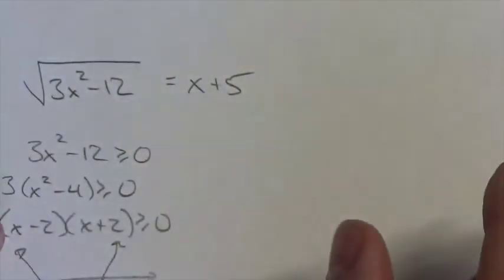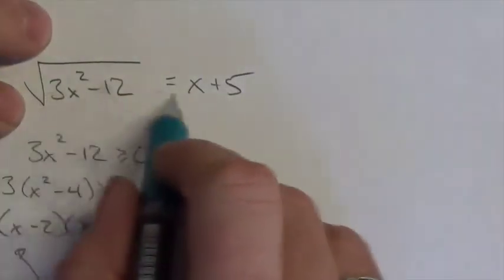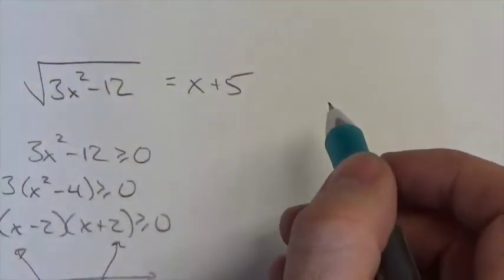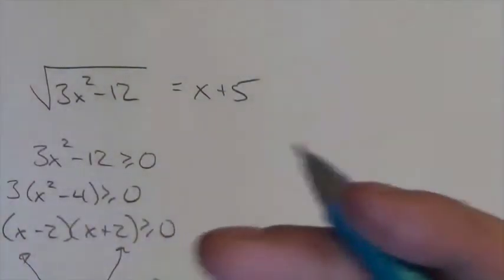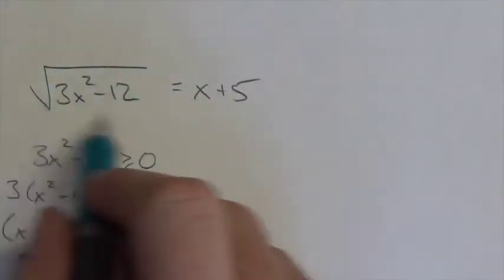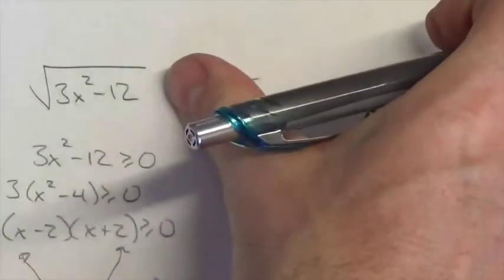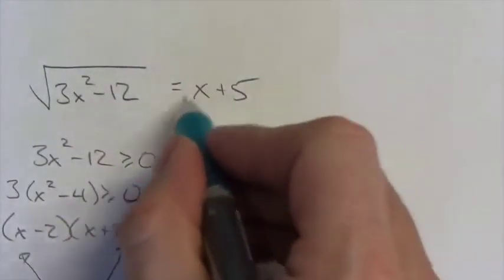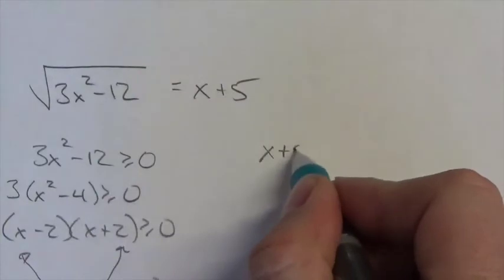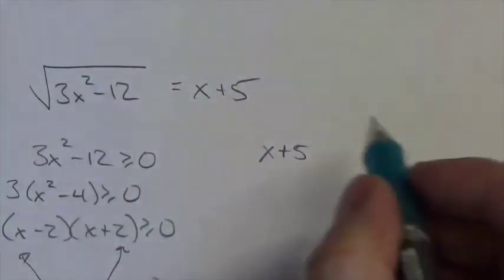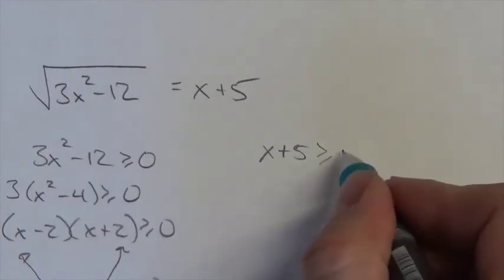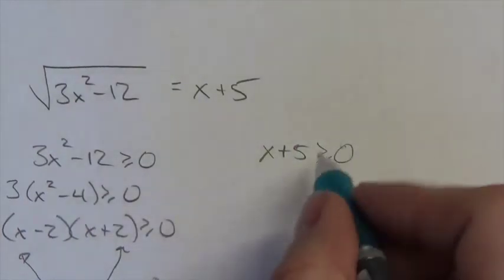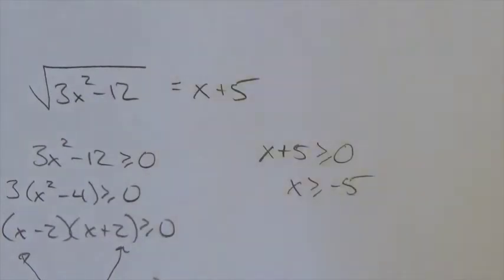Now, that doesn't answer the question for us completely yet, because remember, the radical is equal to a linear expression here. Now remember, a radical can only produce positive values. Okay, so the left-hand side, when all is calculated there, is only producing positive values, which means the right-hand side can only be equal to positive values, which means it's got to be greater than or equal to 0, in which case x is greater than or equal to negative 5.